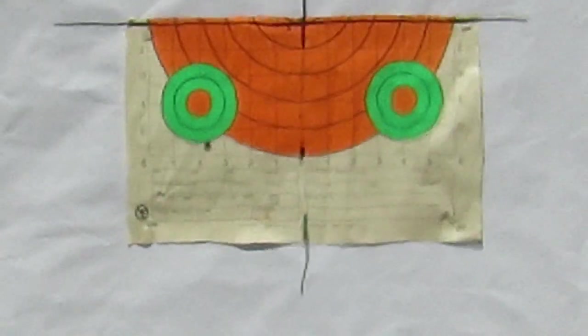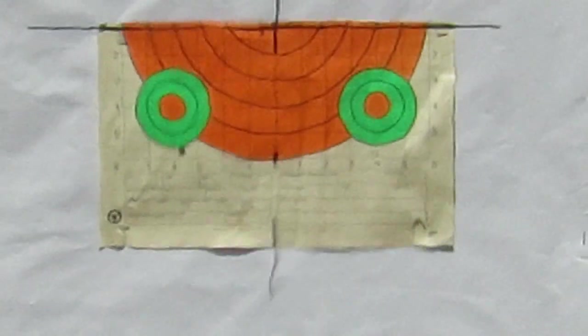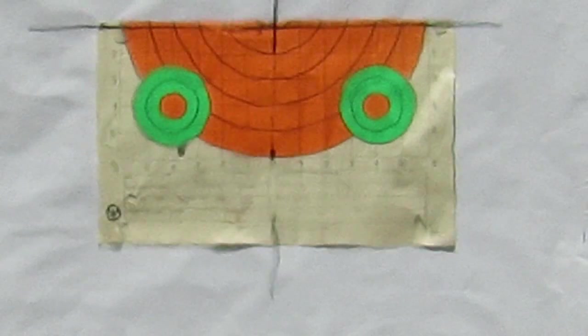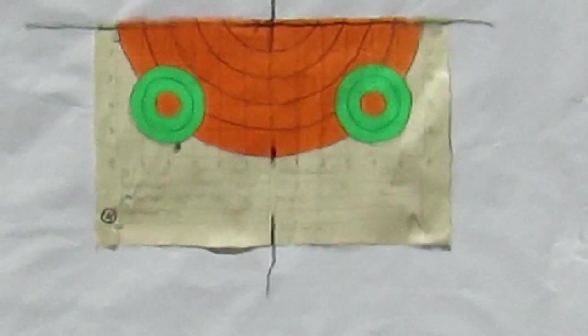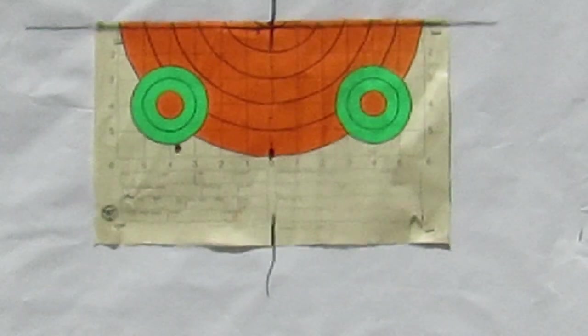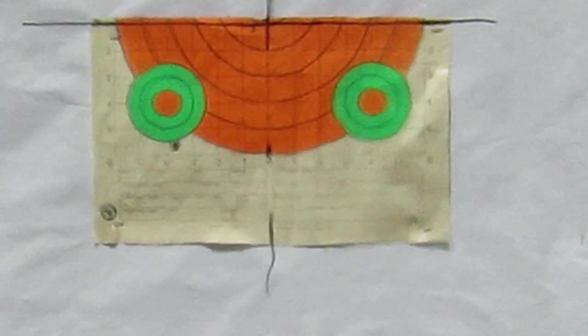Okay, so shot number one. We're doing pretty good actually for not actually bore sighting and just hoping the scope would still be halfway aligned. Shot number one looks like it hit half inch high and one, two, three and three quarter inches left.